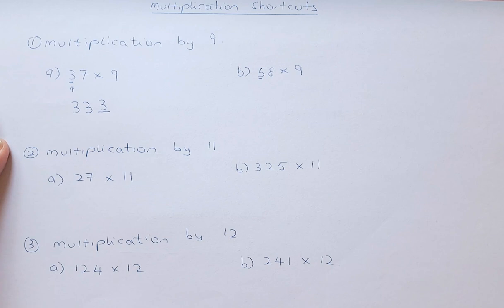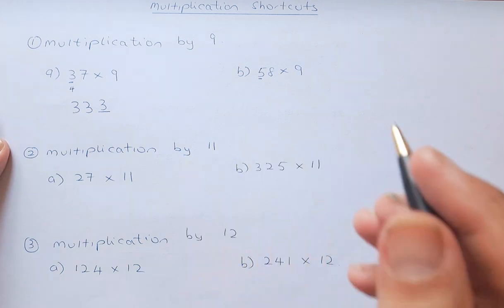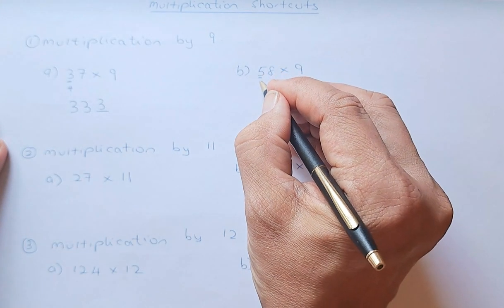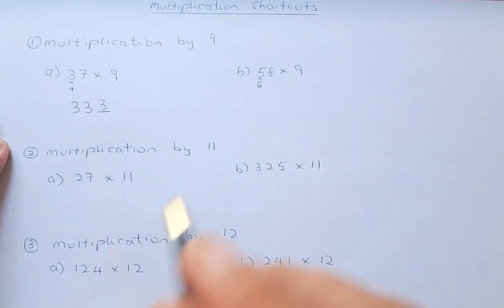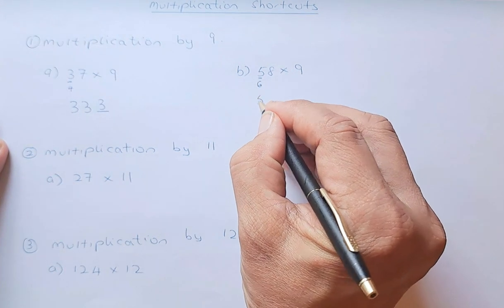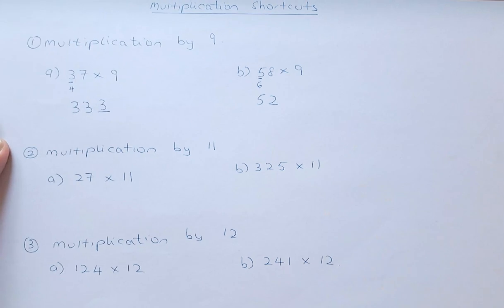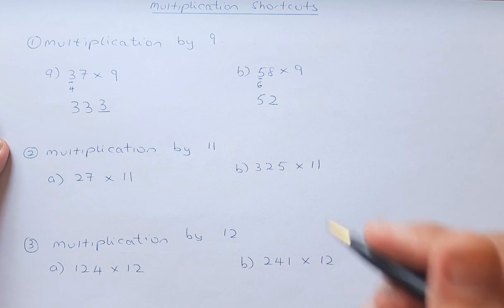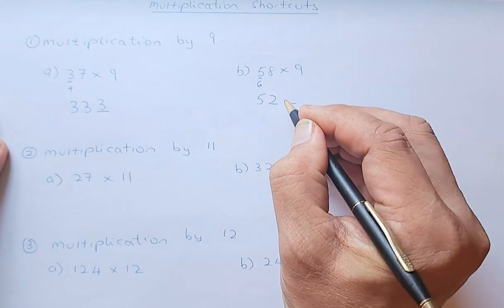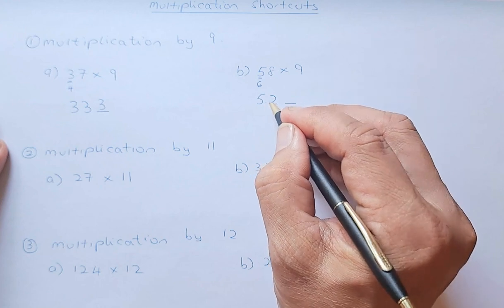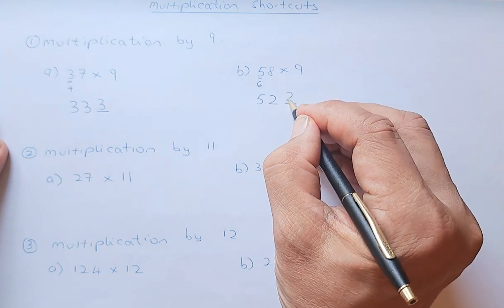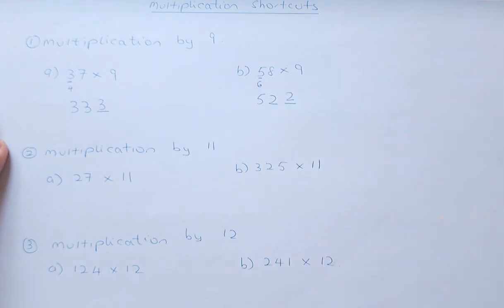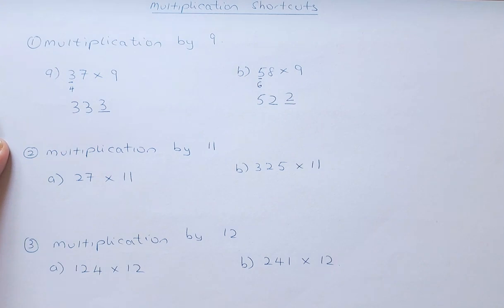Now the second example: 58 times 9. Increase the first digit by 1 to get 6. Then 58 minus 6 is 52. The last digit must make the total a multiple of 9 — 5 plus 2 is 7, so the next digit must be 2 because 5 plus 2 plus 2 is 9. It doesn't have to be exactly 9, it just has to be a multiple of 9.